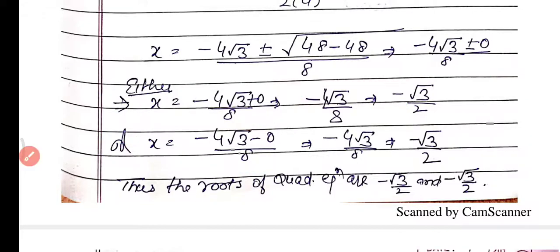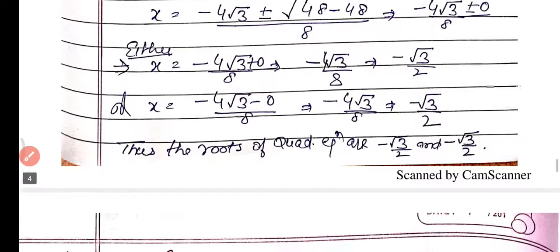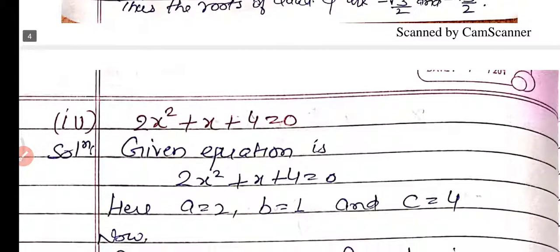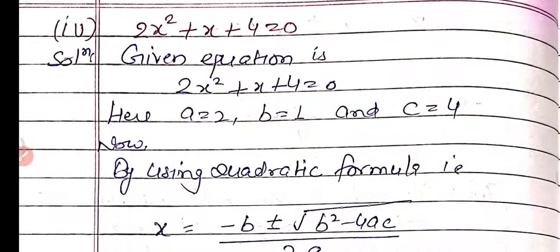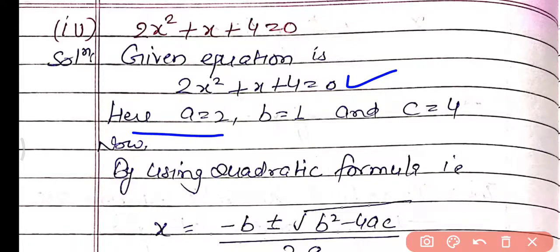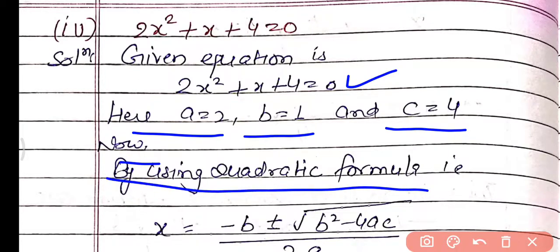You can pause the video and note it down. Now proceed for part number 4. The given quadratic equation is 2x² + x + 4 = 0. Here the coefficient of x² is a = 2, the coefficient of x is b = 1, and the constant term is c = 4. By using the quadratic formula x = (−b ± √(b² − 4ac)) / 2a, we find the roots.